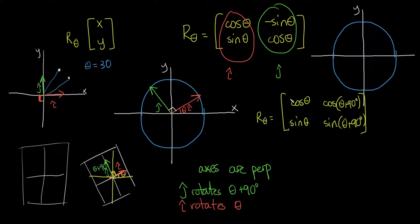It's saying, rotate the first knob, the first axis, rotate it theta degrees. Rotate the next axis theta plus 90 degrees to maintain perpendicularity.